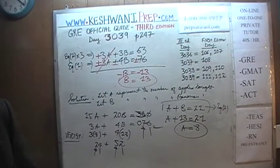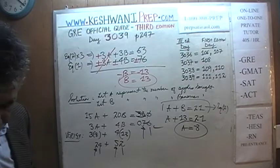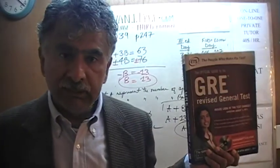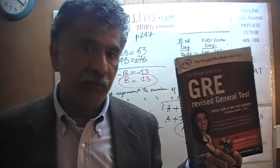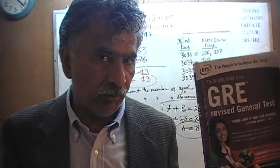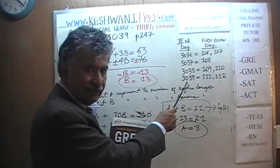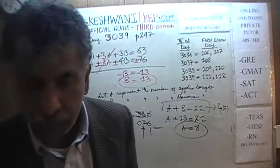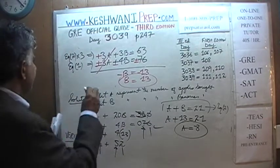Let's do the next problem: 2.7.9. By the way, if you're interested in watching the original solutions, these problems also appeared in the first and second editions of the book. You'll find the original solutions on day number 111 and 112 — just type in GRE Math day 111 and 112 instead of GRE Math day 3039. What we did there in two videos is what we're going to do here in one video.